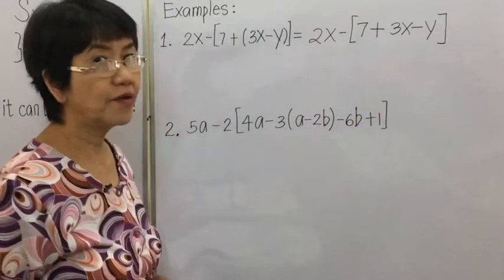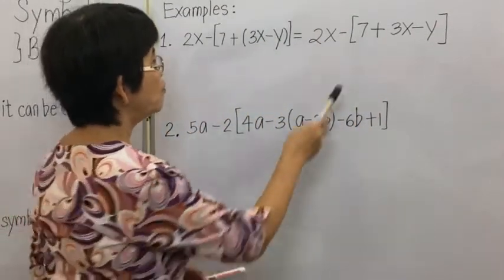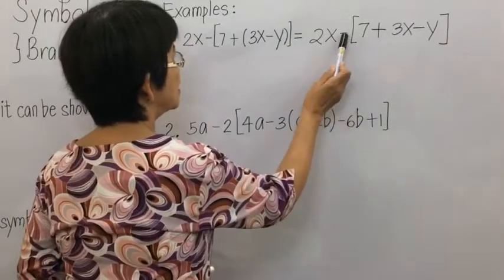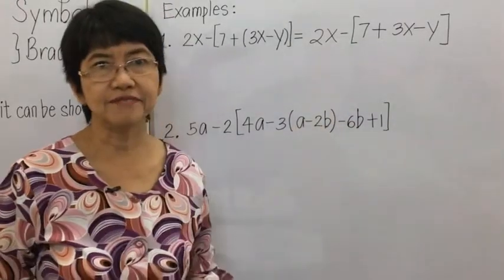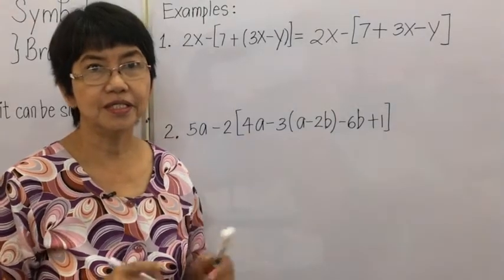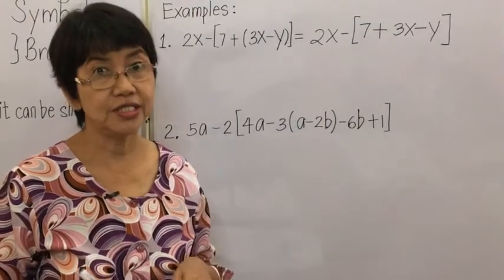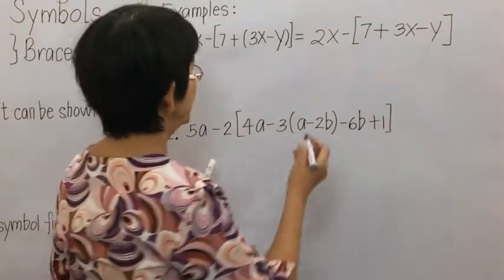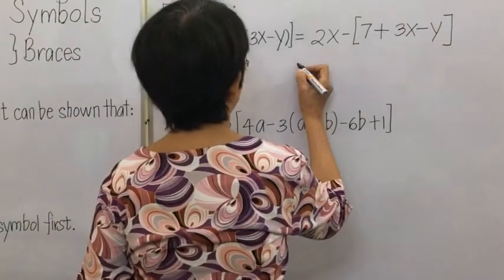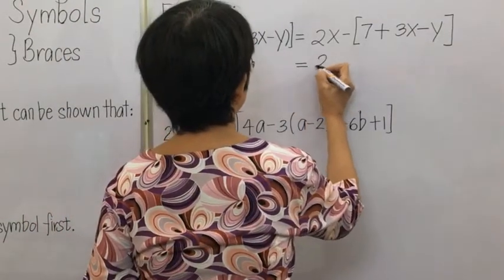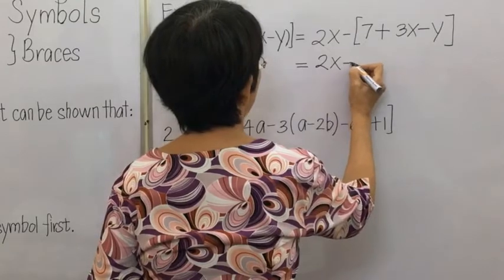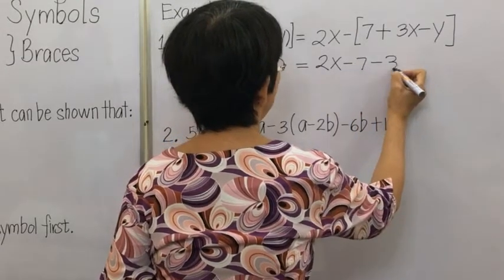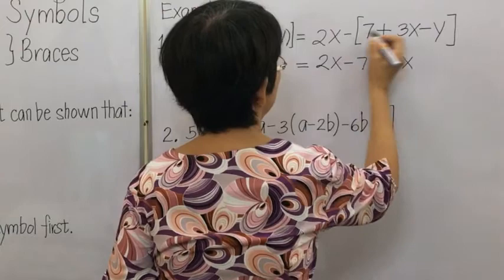For the next step, we remove the outer grouping symbol, but it is preceded by a negative sign, so there is a change of signs inside. We have 2X minus 7 minus 3X, then plus Y.